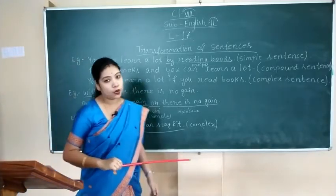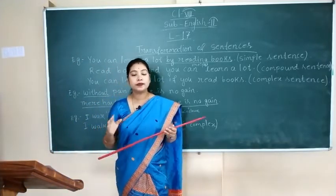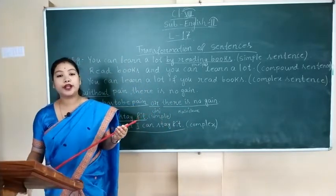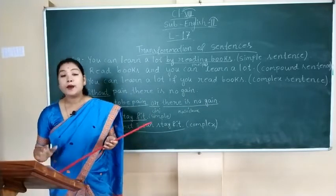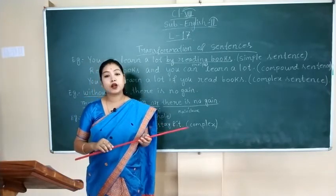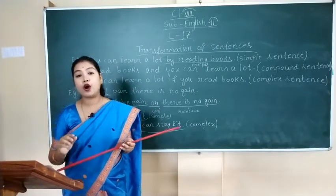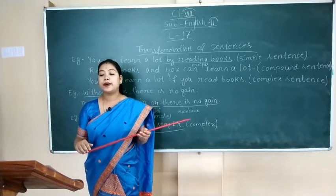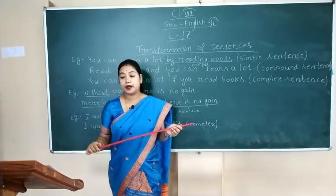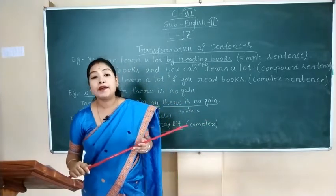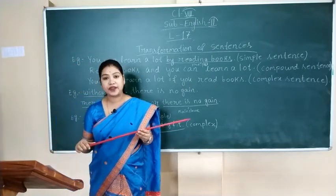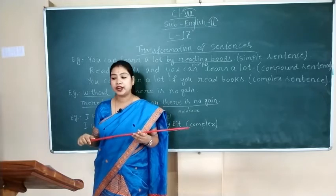We can also transform simple sentences into simple sentences — that means converting compound or complex sentences into simple ones. We can transform a compound or a complex sentence into a simple sentence by reducing — not expanding, but reducing — a clause into a noun, adverb, or a prepositional phrase, or by using a participle, gerund, or infinitive.